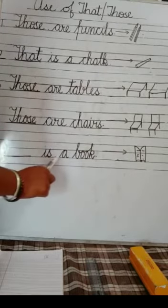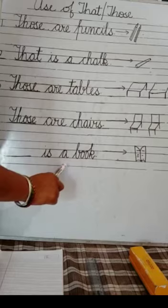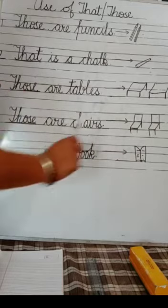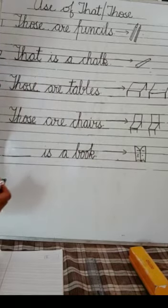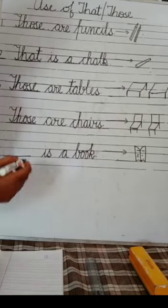Dash is a book. A book means one book is there. So you will fill that. That is a book.